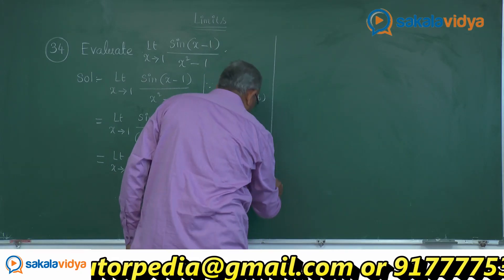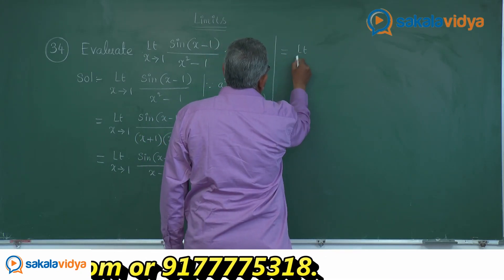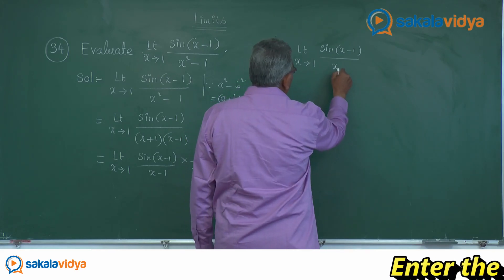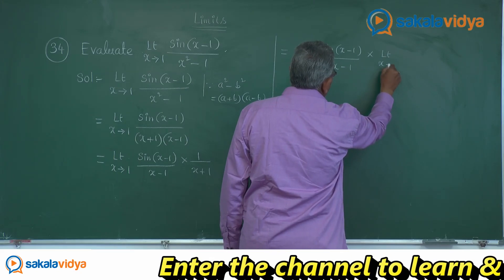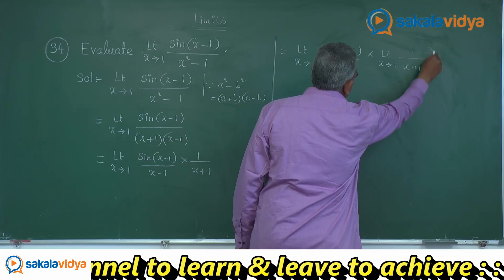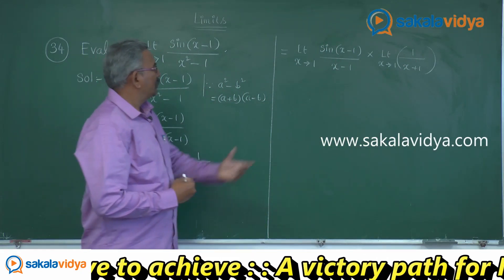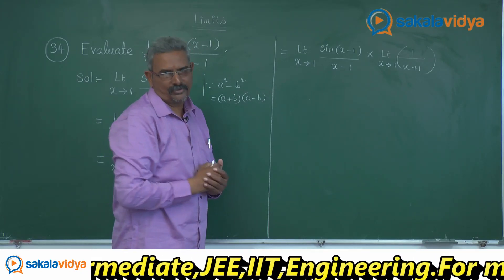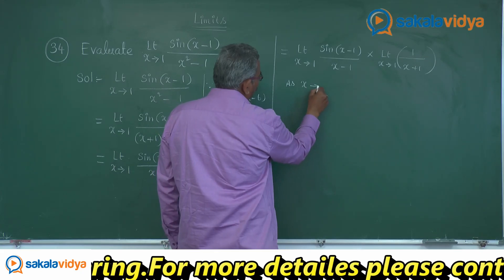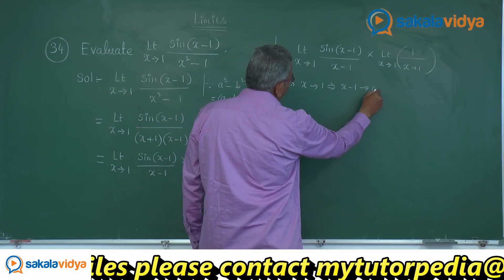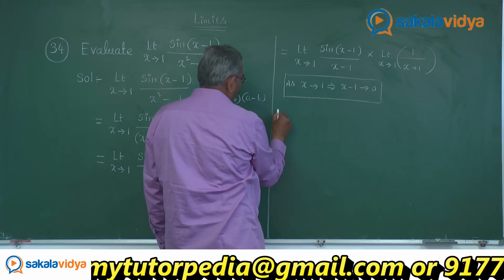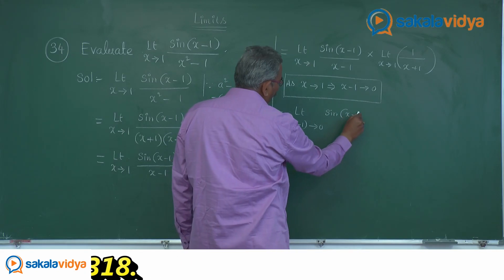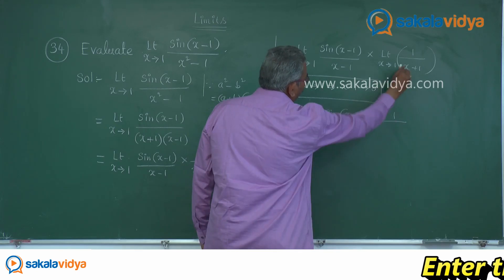So let it be done: limit x tends to 1 of sin(x-1)/(x-1) into limit x tends to 1 of 1/(x+1). As x approaches 1, x minus 1 also approaches 0. So we can write: limit (x-1) tends to 0 of sin(x-1)/(x-1), multiplied by 1/(1+1).